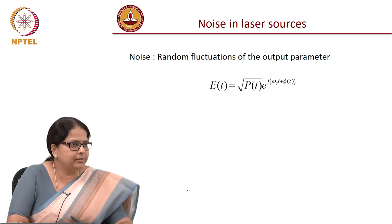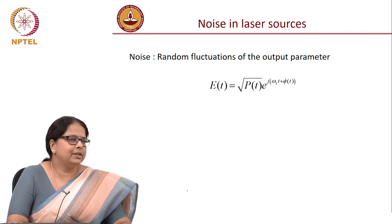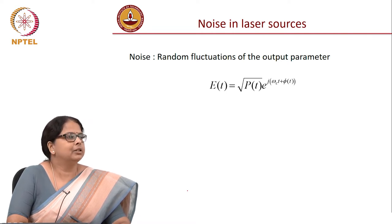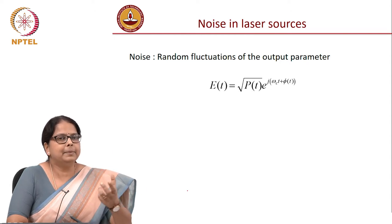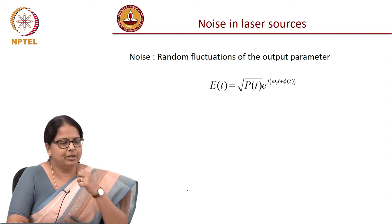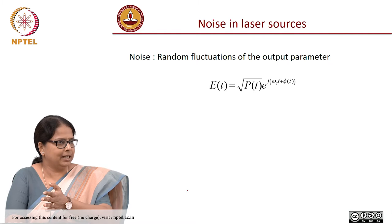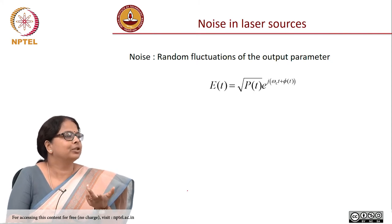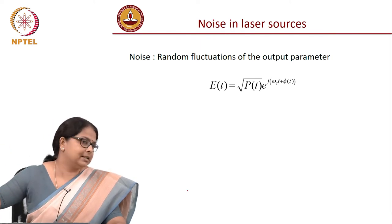Other non-idealities of the laser we need to worry about because these are all what would matter in a communication system. The other day we talked about Shannon's theorem, where we said that the capacity of the system is decided by the signal-to-noise ratio at the receiver. The SNR at the receiver has multiple different contributions: the noise at the transmitter, the noise in the channel, and the noise in the receiver. Before we move on to the channel, we have to understand what are the sources of noise in the transmitter. This will all build up in the final SNR of the system.